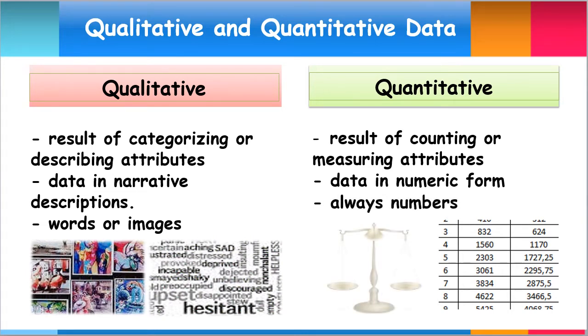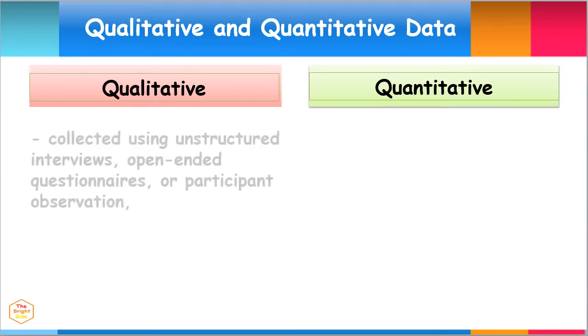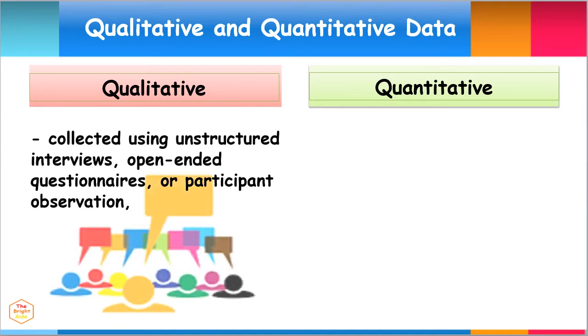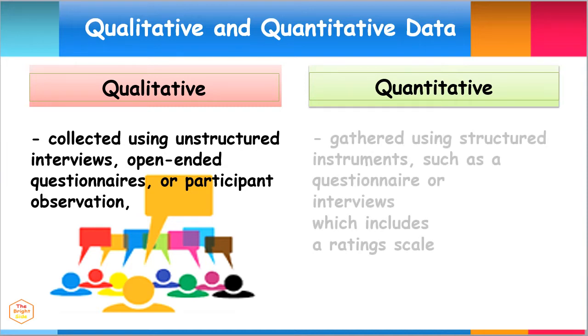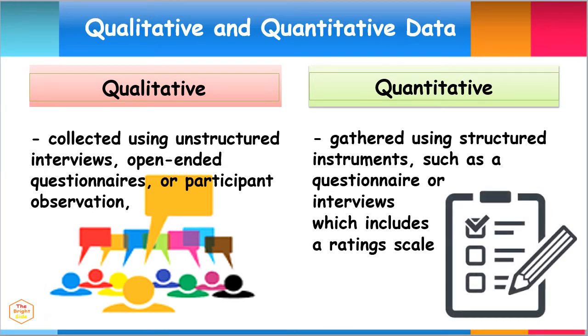Qualitative research data are collected using unstructured interviews, open-ended questionnaires, or participant observation. Quantitative research data are usually gathered using instruments such as questionnaires or interviews which include a rating scale.